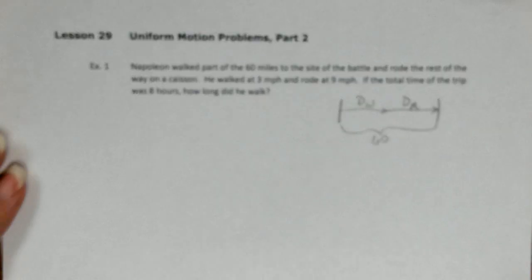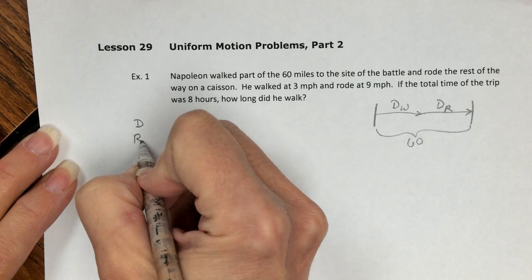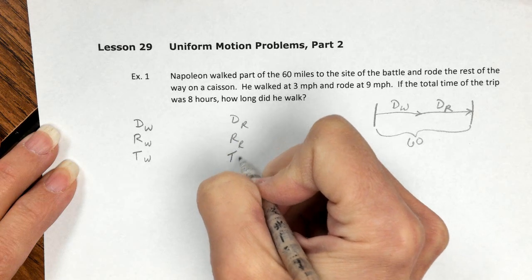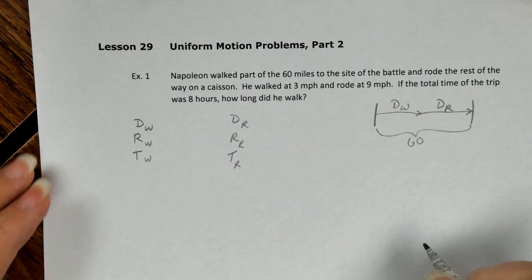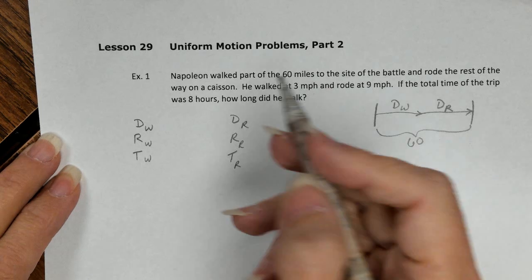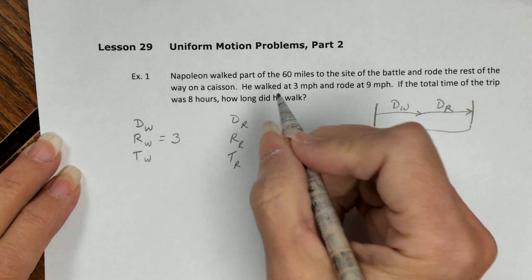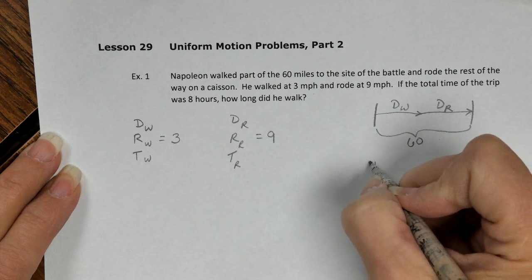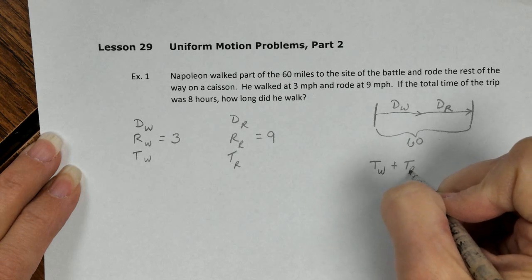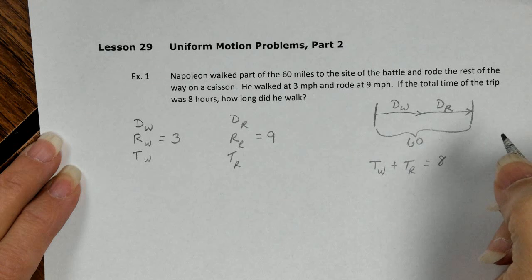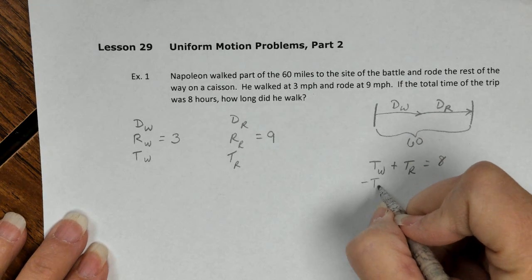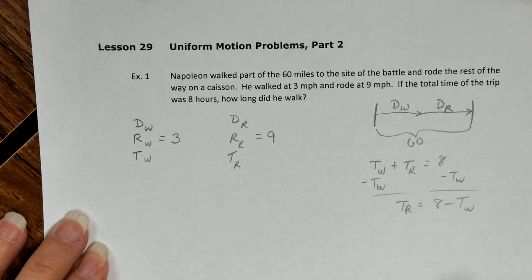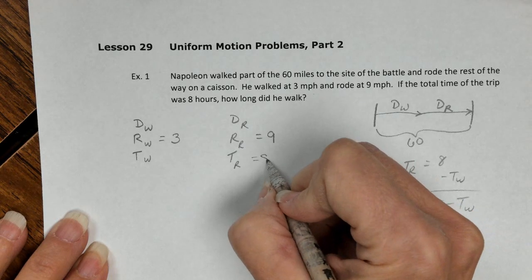So we see that his distance walking plus his distance riding is 60. We're still going to have our two lists: distance, rate, time walking, and distance, rate, time riding. He walked at 3 miles per hour, that's his rate. He rode at 9 miles per hour. And the total time is 8 hours. That means his time walking plus his time riding is 8. So his time riding would be 8 minus TW. Time riding is 8 minus time walking.